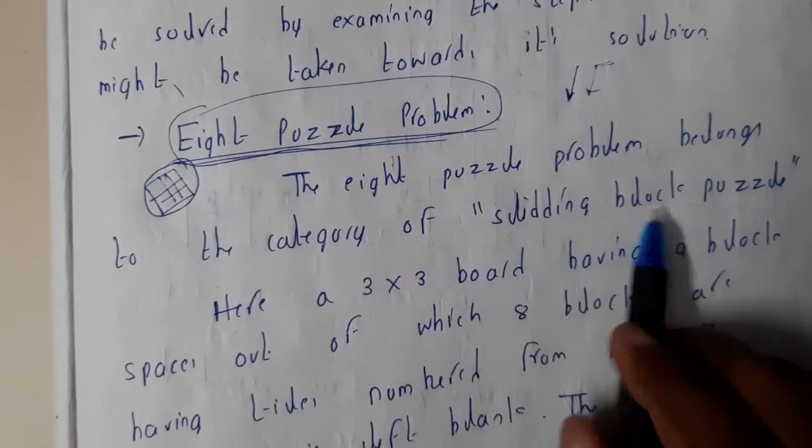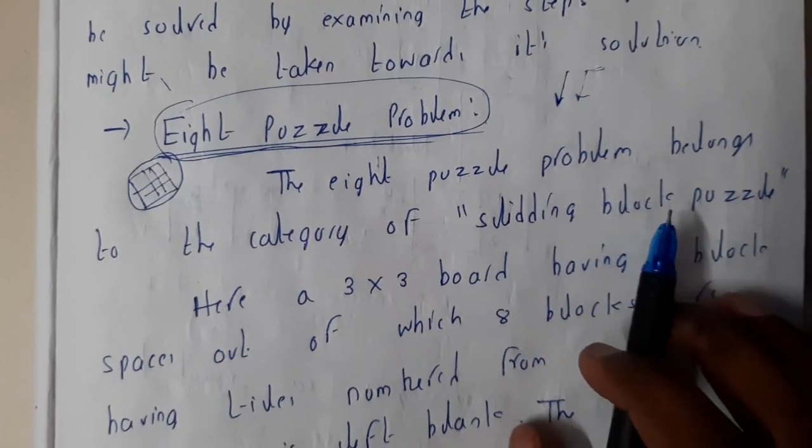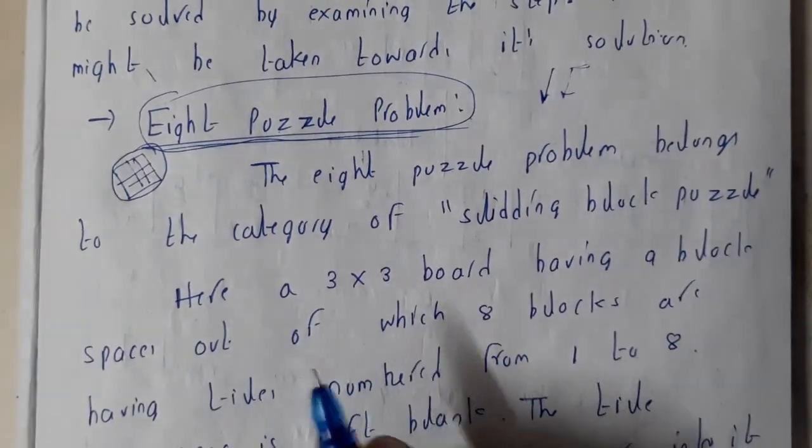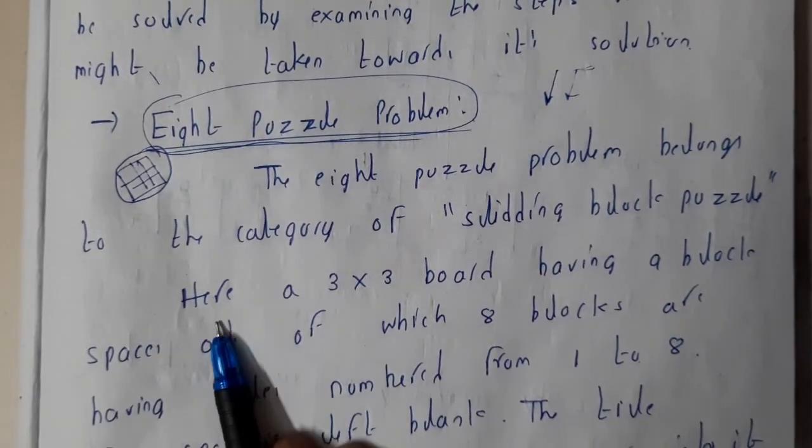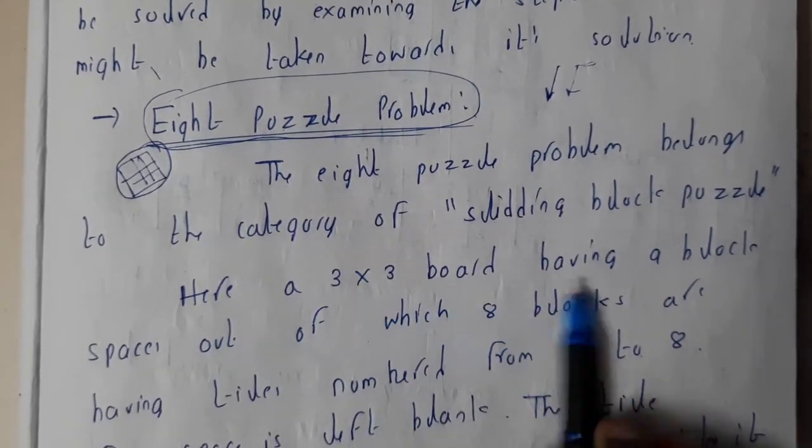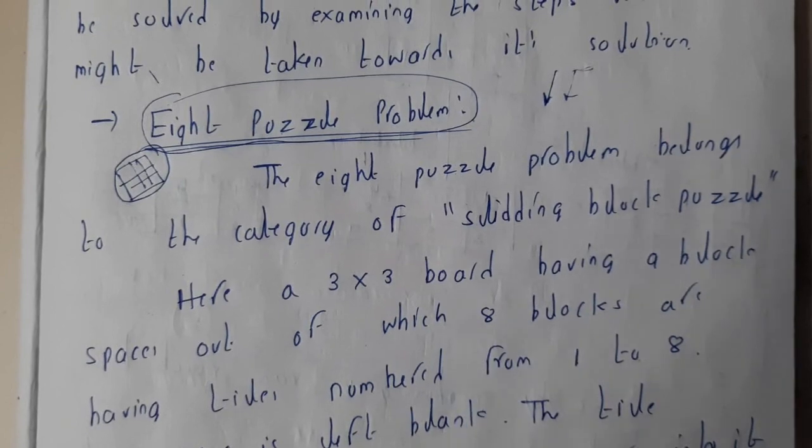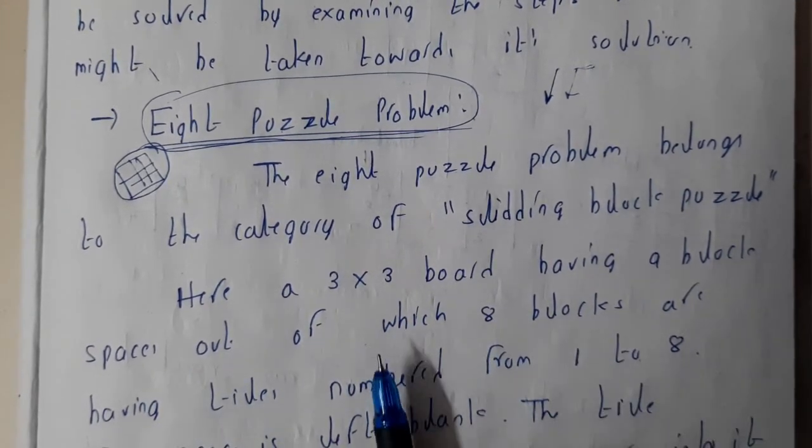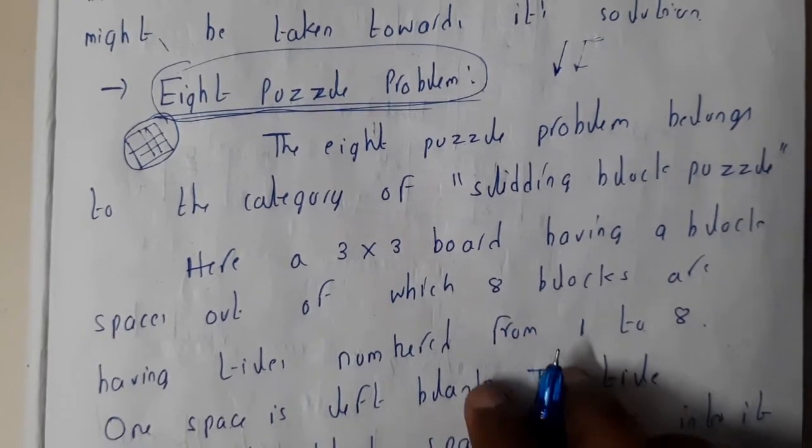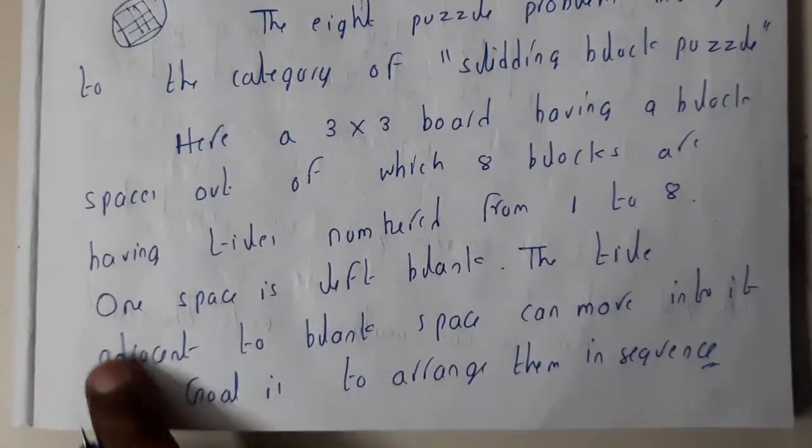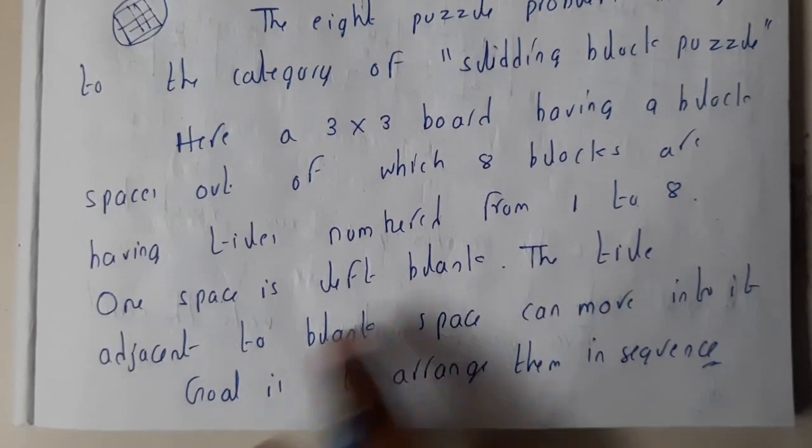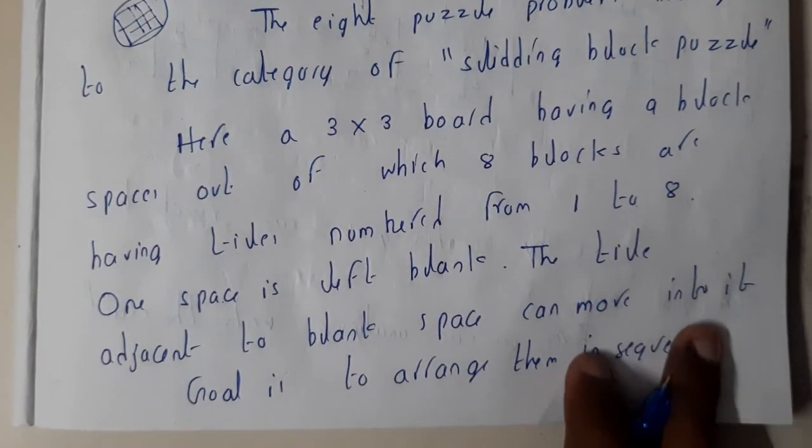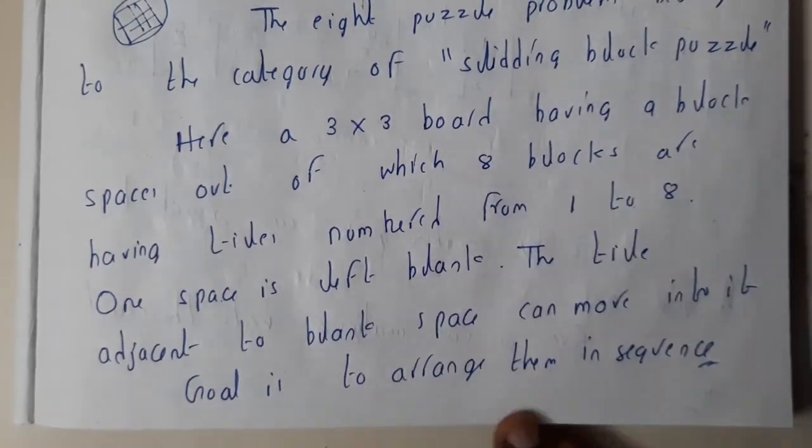There are many apps—just go to the Play Store and type eight puzzle problems. Here, a 3x3 board has block spaces, out of which eight blocks have numbers. We have one empty block and eight numbered blocks. The tiles adjacent to the blank space can be moved into it—right, left, bottom, or top. The goal is to arrange them in sequence.